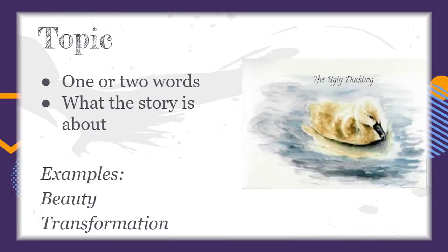First, start by trying to identify the topic of the poem. This is usually something you could relay in one or two words, and it's what the story or poem is about. For example, you could say that this poem is about the concept of beauty, or about the concept of transformation, or getting older, or many other things.